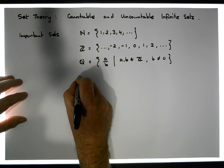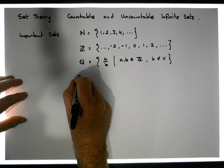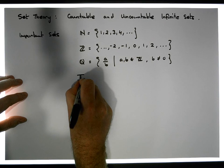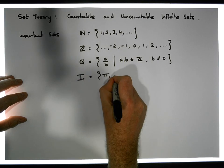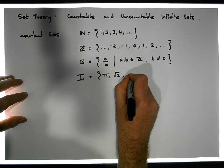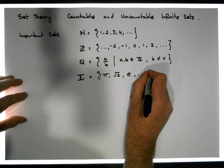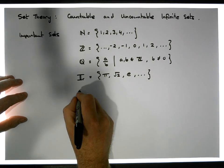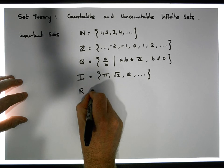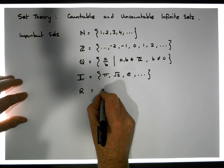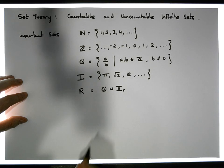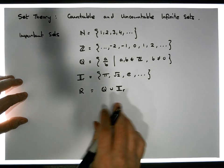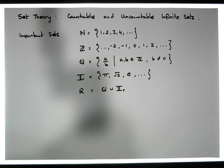Then we have the set of irrational numbers — numbers such as π, √2, e, and so on. And we have the set of real numbers, which by definition is equal to the rationals unioned with the irrational numbers. Finally, we have the complex numbers.